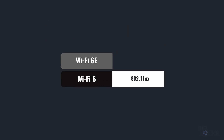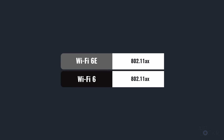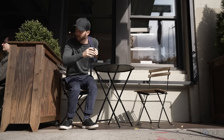Wi-Fi 6E is Wi-Fi 6, but the E basically stands for extension. So it's extending Wi-Fi 6 into the 6 gigahertz frequency band, which we'll discuss in a sec.